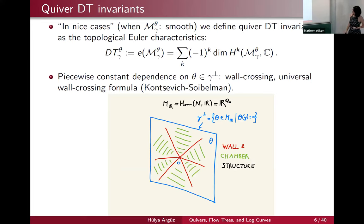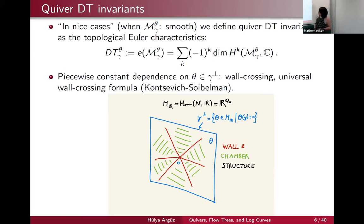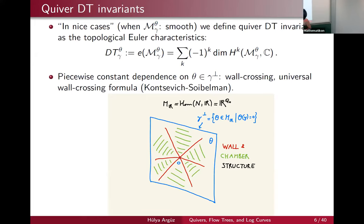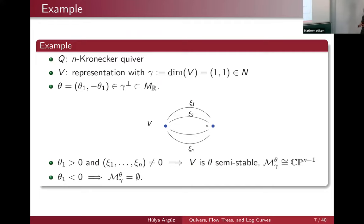In nice situations — which will be very rare — for instance when this moduli space might be smooth, we define the quiver DT invariant as the topological Euler characteristic of this moduli space, which is the alternating sum of the Betti numbers. The most important thing about quiver DT invariants is there's a piecewise constant dependence on the stability parameter theta. So if you look at your dimension vector gamma and gamma-perp in the dual space, there's a wall and chamber structure. As long as you're inside one of these green chambers, your quiver DT invariants for any theta there will be the same, but if you cross one there will be some change, which can be described using some wall crossing structure due to Kontsevich-Soibelman.